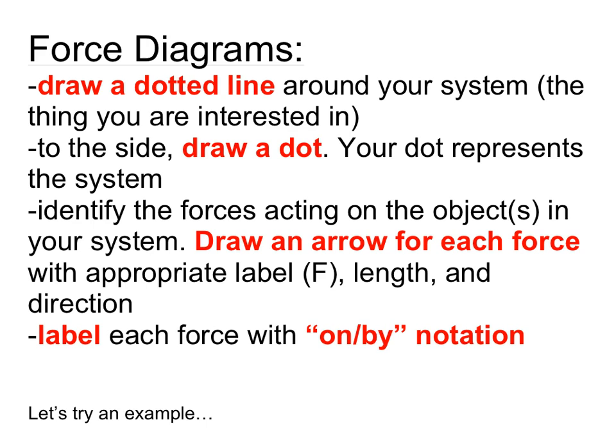The second thing to do is draw a dot to the side. This is going to represent our system, and then after that we identify the forces acting on the objects in the system and draw an arrow for each force that we find using the appropriate label, length, and direction. And then finally we're going to complete our label by using on/by notation to let us know what the force is acting on and what's doing the force.